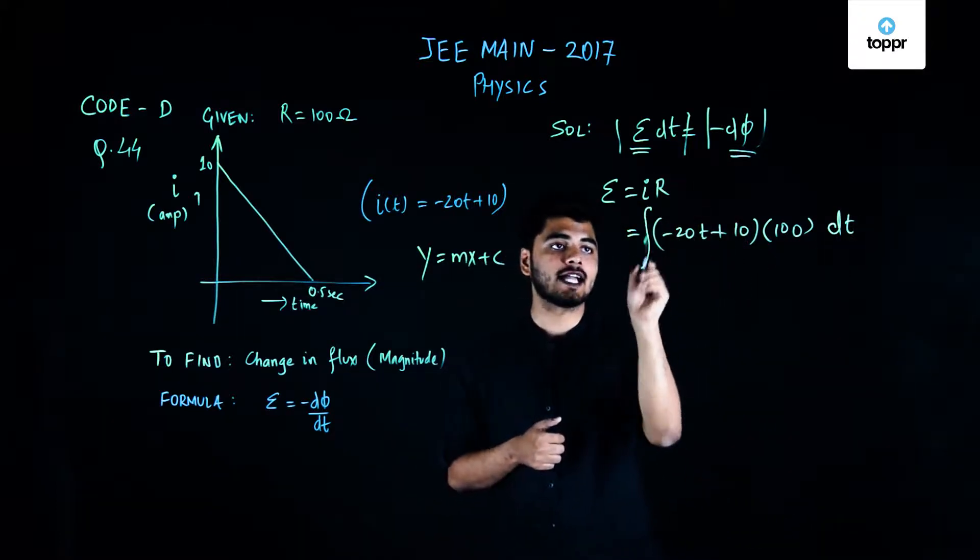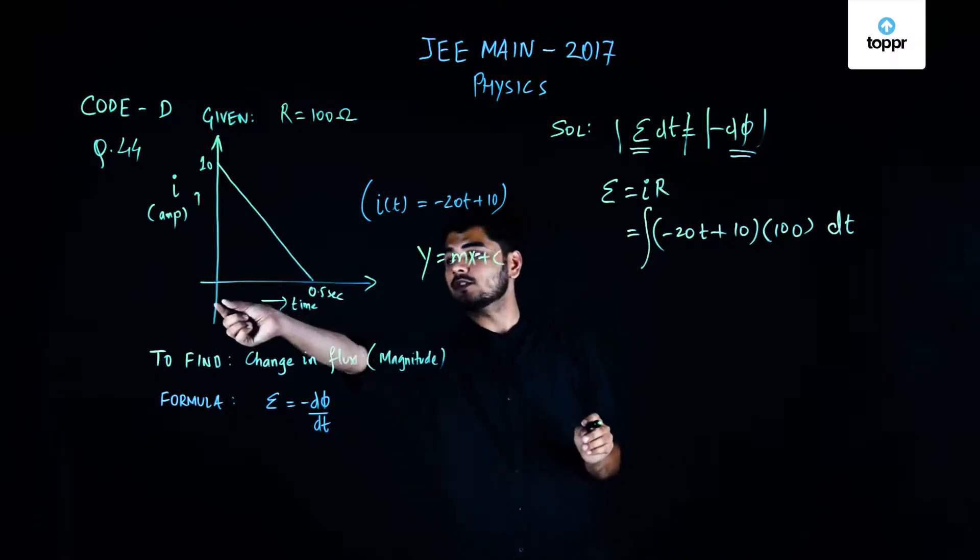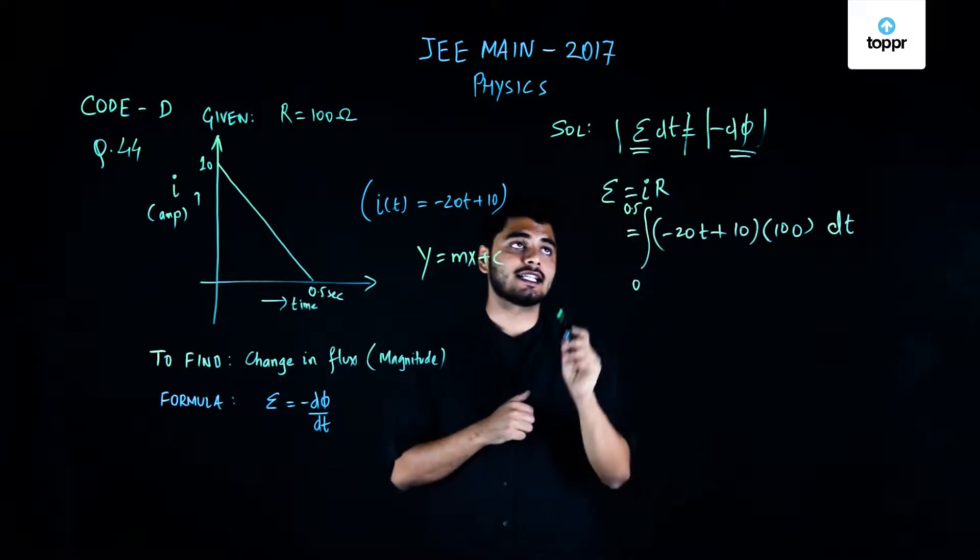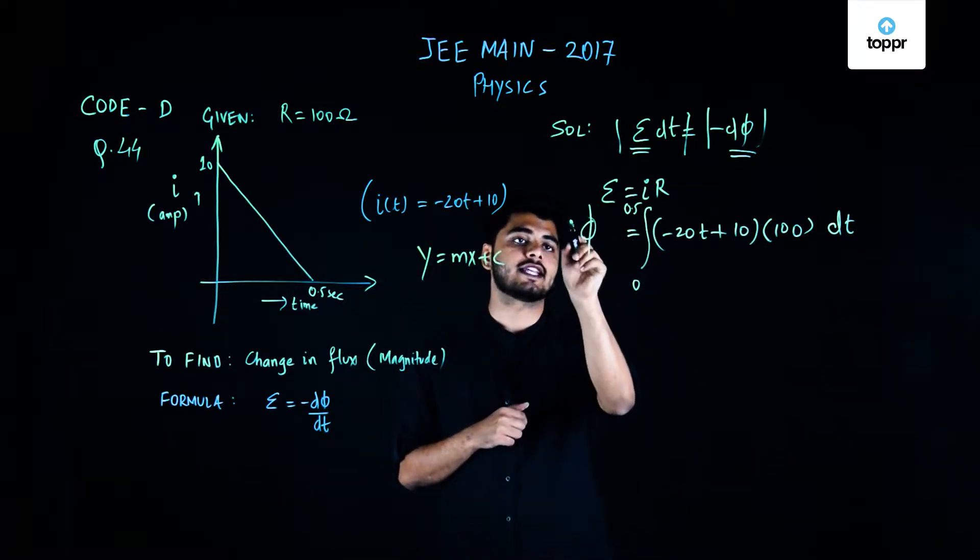So if I just integrate this entire equation from time t equals 0 to time t equals 0.5 second in which the entire change took place, I'll get nothing but the value of change in flux.